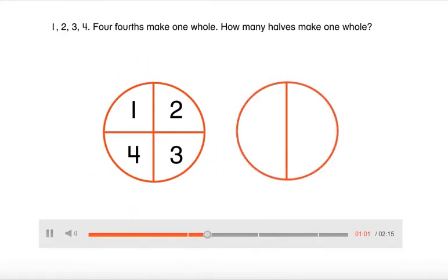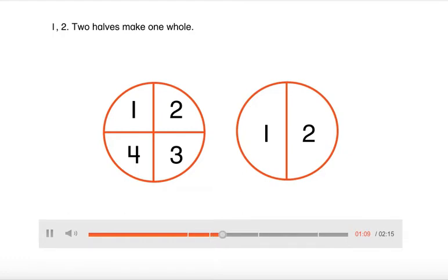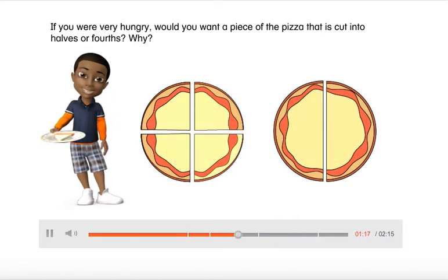How many halves make one whole? One, two. Two halves make one whole.